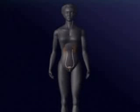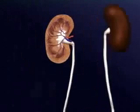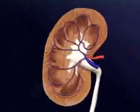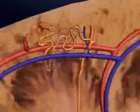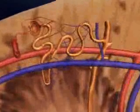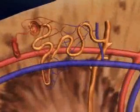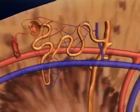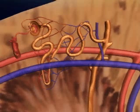The mammalian kidney helps regulate water balance and removes wastes from the blood. The functional unit of the kidney is the nephron, which consists of the glomerular capsule and a long twisted tubule. Each human kidney contains about one million nephrons.